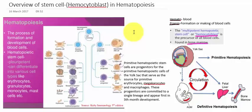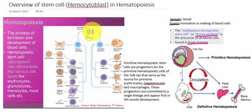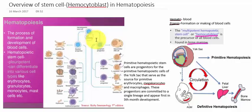Now let's discuss the process. The hematopoietic stem cell, or hemocytoblast, has the ability to develop into many kinds of cells. First, the hematopoietic stem cell differentiates into the myeloid progenitor and the lymphoid progenitor.